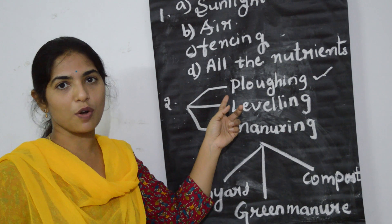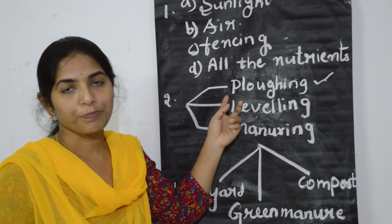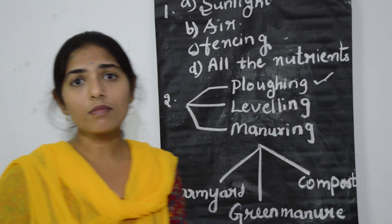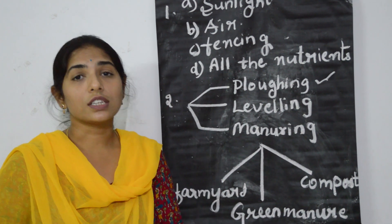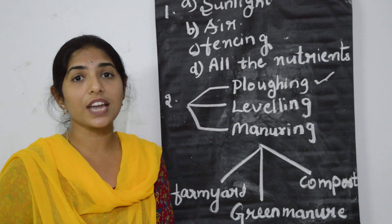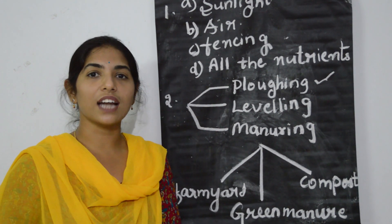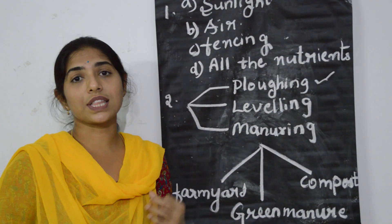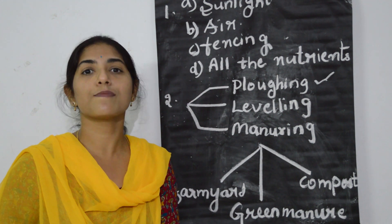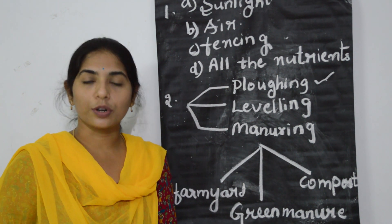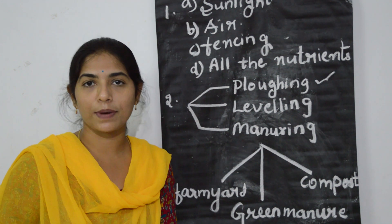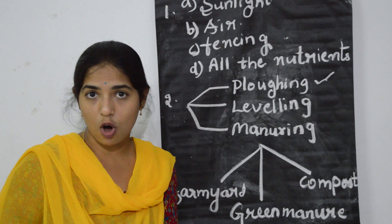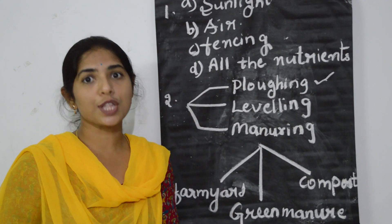There are some advantages of plowing. The first advantage is it helps in turning up of the soil, bringing nutrient-rich soil onto the top, so that the plants can utilize these nutrients properly and helps in proper growth. The second advantage is it provides proper aeration so that soil bacteria can grow properly and help in decaying dead plants, dead leaves and organisms, which adds humus to the soil.